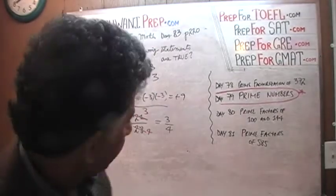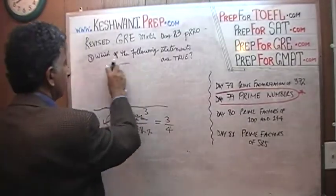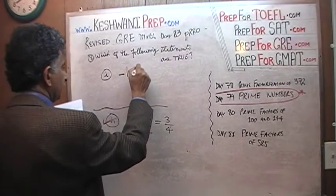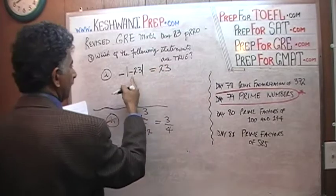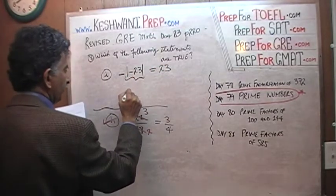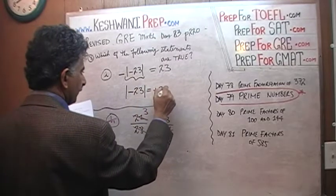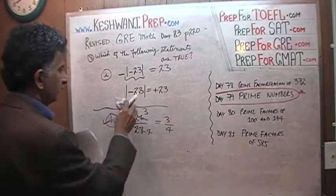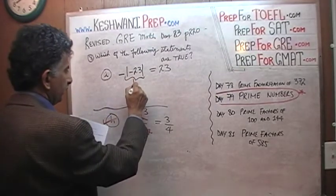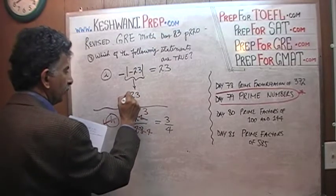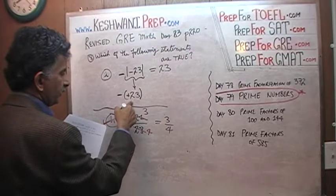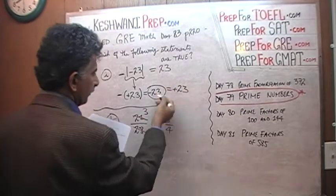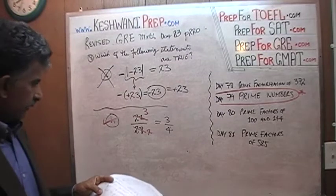Statement I says negative of the absolute value of negative 23 equals 23. The absolute value of negative 23 means positive 23 — absolute value means you ignore the negative sign. So this quantity is positive 23, but then we have a negative in front: negative times positive 23 gives us negative 23. We are told that negative 23 equals positive 23, which of course is nonsense. A negative 23 cannot equal positive 23. False.